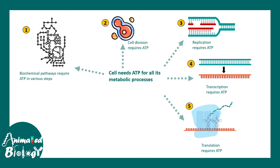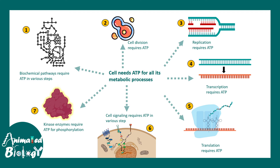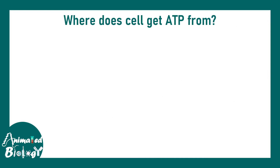Without ATP, any of these central dogma processes cannot happen. Also, cells need to communicate with each other and receive signals from outside, so cellular signaling also requires ATP at various steps. Many enzymes — for example kinase enzymes, which are crucial for several biochemical pathways — require ATP for phosphorylating substrates. That is why ATP is so crucial.